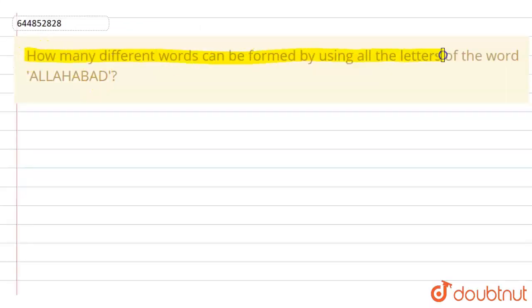The question is: How many different words can be formed by using all the letters of the word Allahabad? We have letter A, double L, A, H, A, B, A, D.